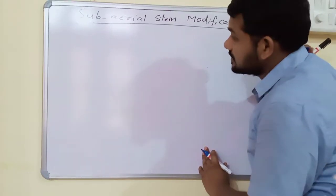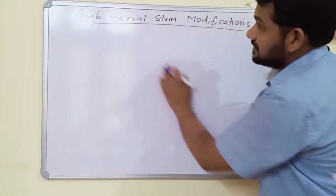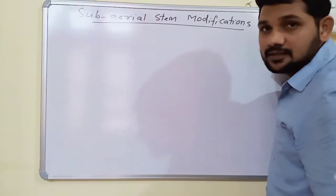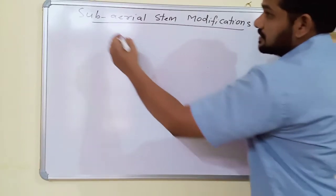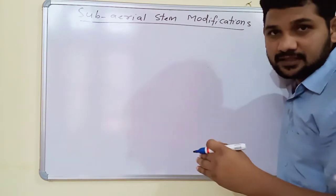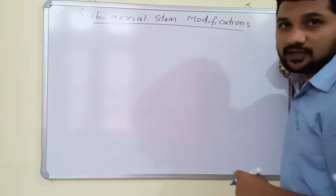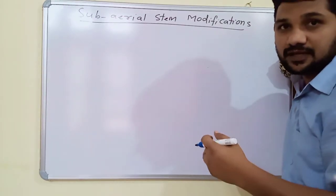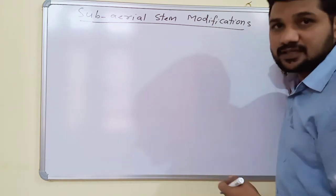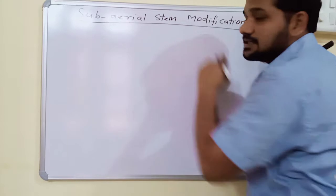Good morning students. In this video, we will discuss the second type of stem modifications — sub-aerial stem modifications. Sub-aerial stem means in some cases half of the stem grows below the soil and half grows above the soil. Such stems get modified to perform various new functions or to adapt to changes in environment. Such modifications are called sub-aerial stem modifications.